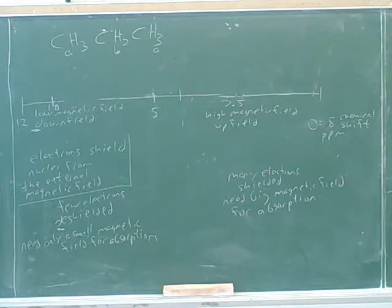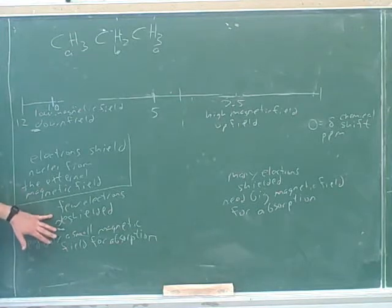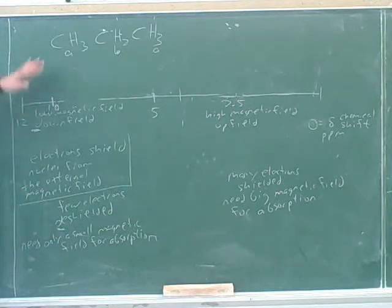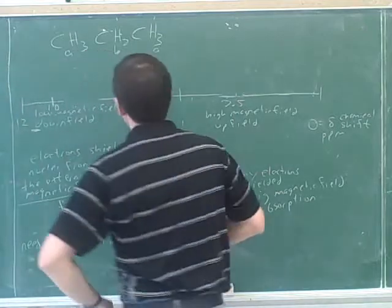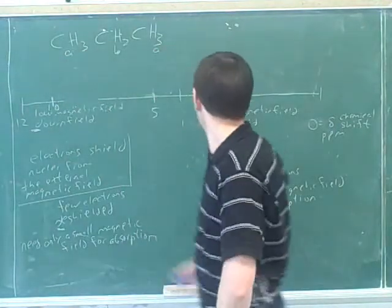You just have to have memorized that primaries are furthest to the right and tertiaries are furthest to the left. That's not nearly as big an effect, by the way, as electronegativity. This is a much bigger effect. However, the A should still be further to the right. Now where exactly would we expect this to be?